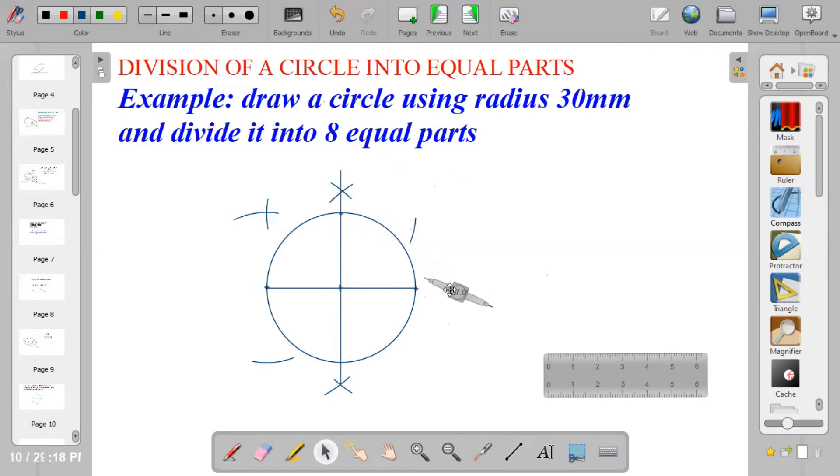I will take my compass to point 3 using the same radius. Strike an arc above, and I will take it below and strike another arc.